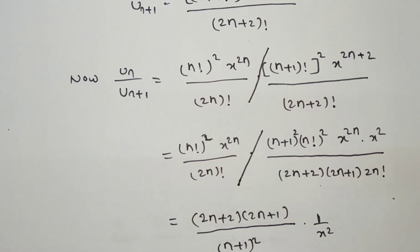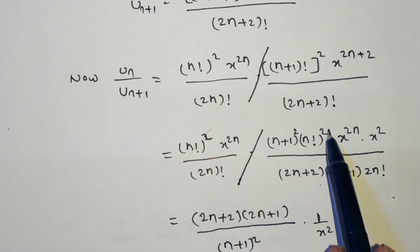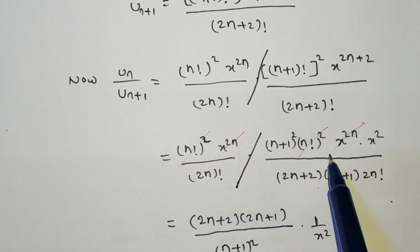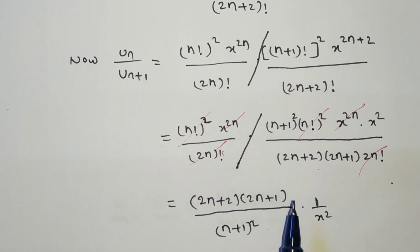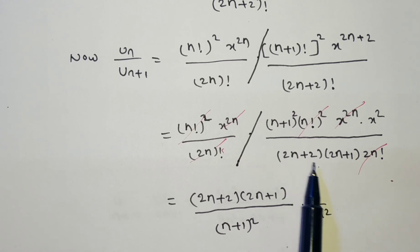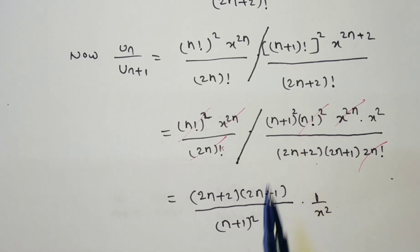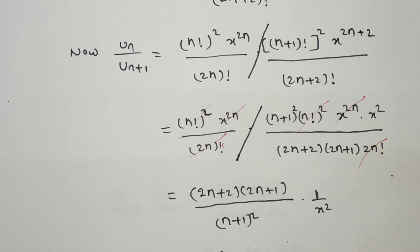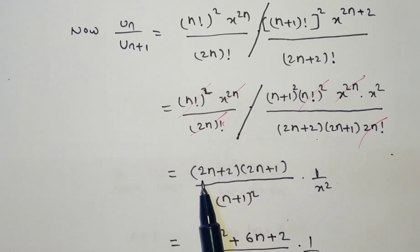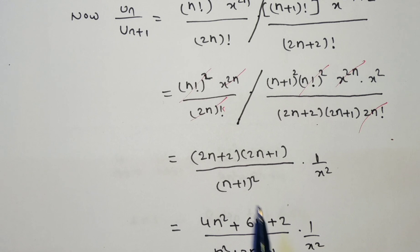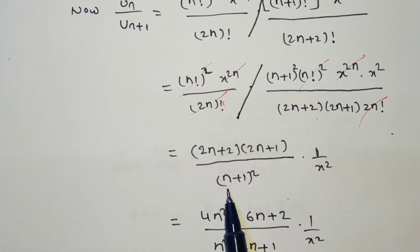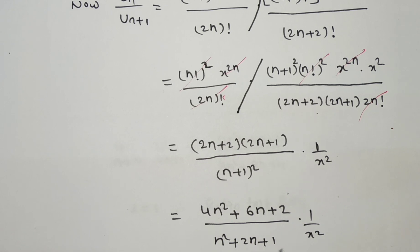Now (n factorial)² cancels with (n factorial)², x^{2n} cancels with x^{2n}, and (2n factorial) cancels with (2n factorial). The remaining terms — taking the reciprocal — give u_n/u_{n+1} equal to (2n+2)(2n+1) divided by (n+1)² times (1/x²). This is u_n divided by u_{n+1}.